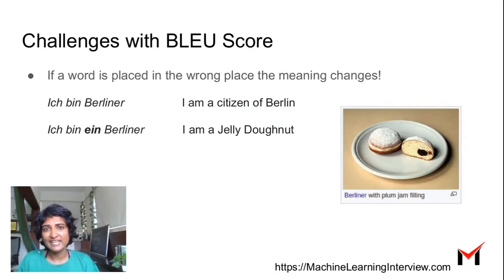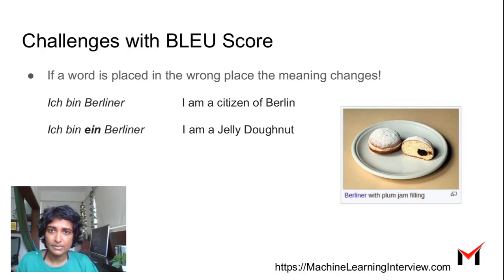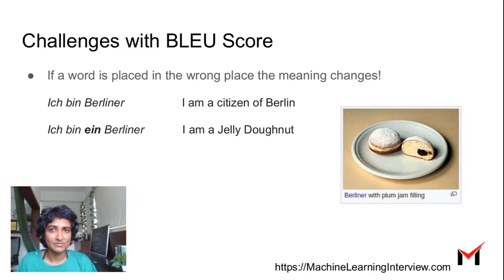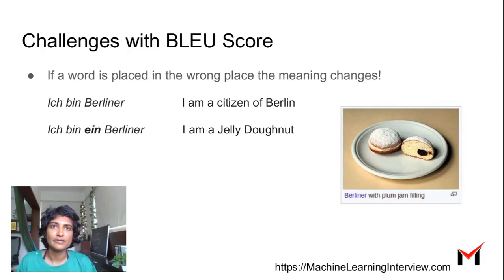What are some challenges with BLEU score? Sometimes if a word is placed in the wrong order, the meaning completely changes. For instance, a very popular example: in German, 'Ich bin Berliner' means 'I am a citizen of Berlin', but 'Ich bin ein Berliner' means 'I am a jelly donut' apparently. These two sentences are completely different in meaning, and this is something subtle that is not captured very well by BLEU score.